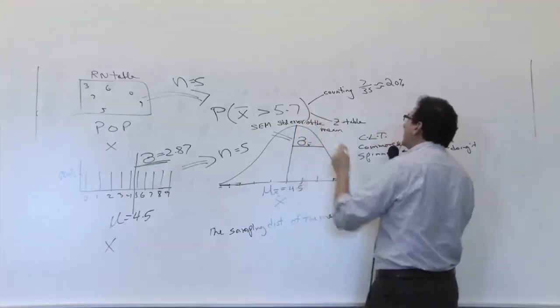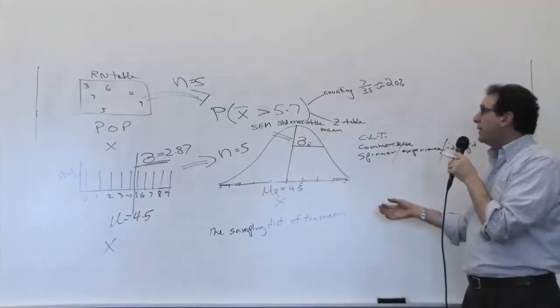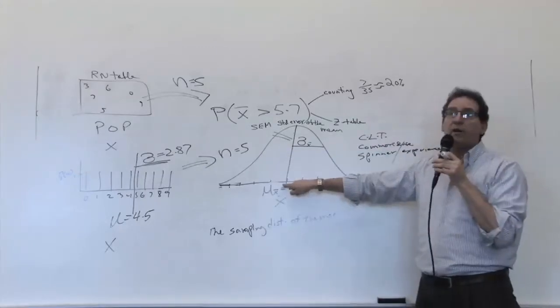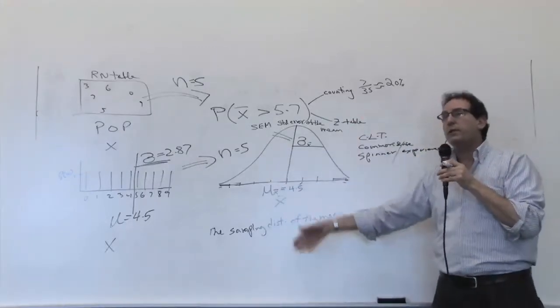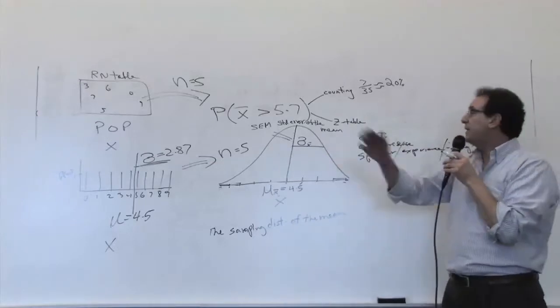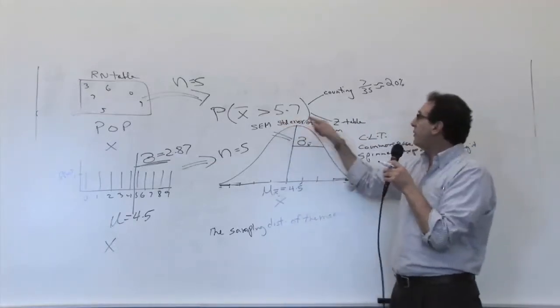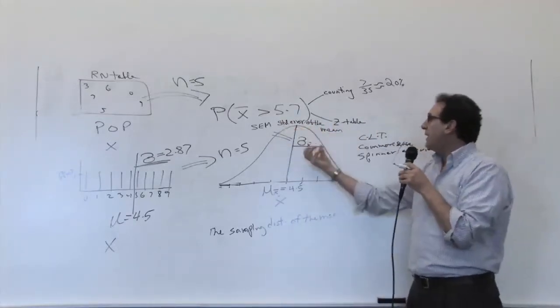Of course, it represents how much in reality you're going to deviate from the ideal number. The ideal number is 4.5, but in reality, you get a 4.8 sometimes, you get a 3.6 other times. It's going to deviate. The Standard Error of the Mean, or the SEM, is that quantity.